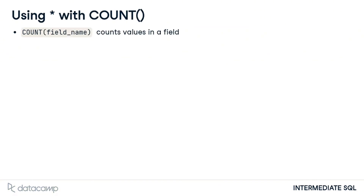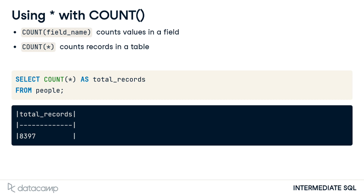Using COUNT with a field name tells us how many values are in a field. However, if we want to count the number of records in a table, we can call COUNT with an asterisk. This code gives the total number of records in the people table. The asterisk represents all fields, and passing it to COUNT is a shortcut for counting the total number of records.